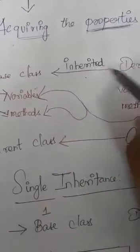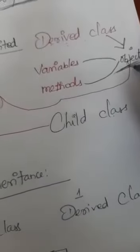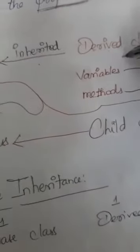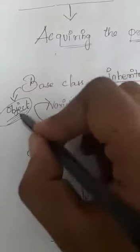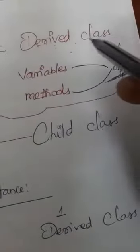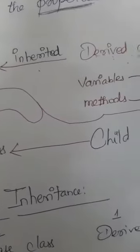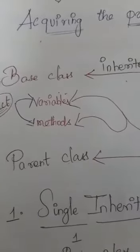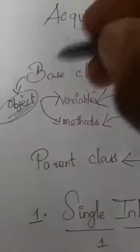These two classes are interrelated. If you create an object for the derived class, with the help of that object you can access both the derived class and the base class. So there is no need to create an object in the base class. Because the derived class and base class are linked together — the derived class is derived from its parent class, which is the base class. It is enough to create an object in the derived class, and with that object you can acquire the properties of the base class.